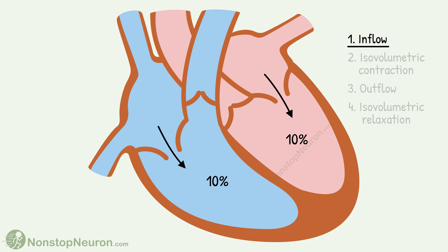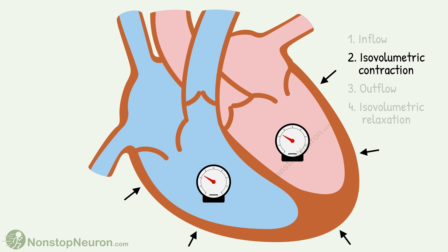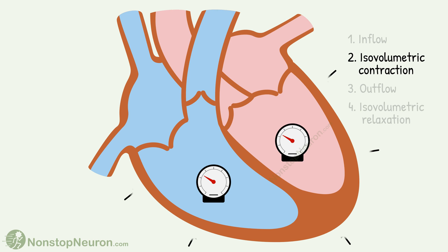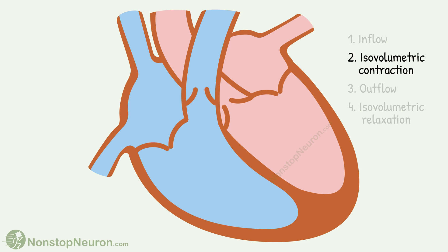Phase 2 is isovolumetric contraction. By the end of ventricular filling, an impulse starts depolarizing the ventricular musculature, so ventricles contract. This causes a rise in ventricular pressure, so atrioventricular valves close. Semilunar valves are already closed during this, so now the ventricles contract as closed chambers. As they contract, the pressure in the ventricles increases but there is no flow of blood, so the volume of the ventricles remains the same — hence this phase is called isovolumetric contraction, equivalent to isometric contraction in skeletal muscles. Eventually, the pressure increases above that in the major arteries and the semilunar valves open, marking the end of this phase.